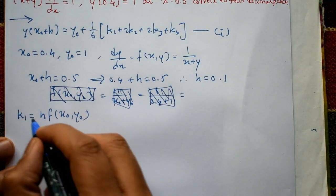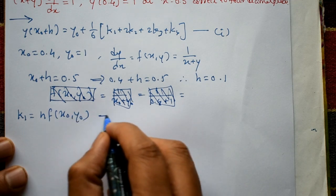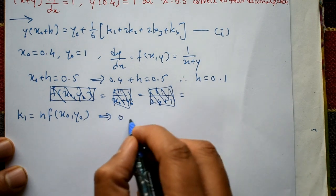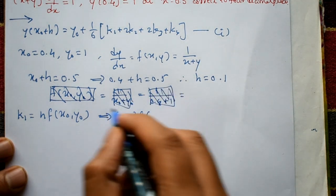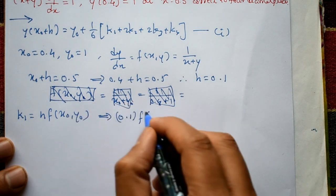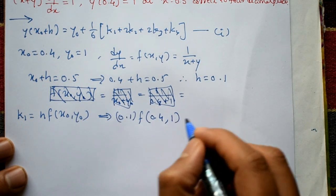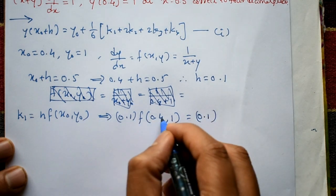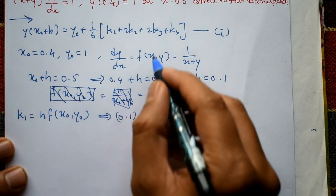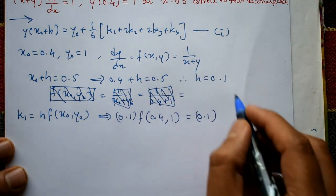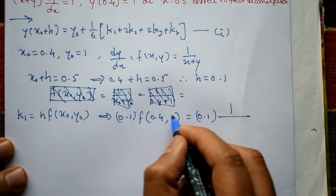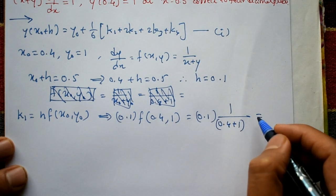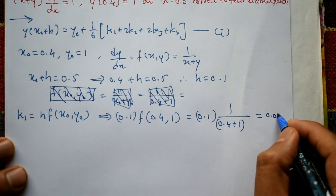Now k1 = h · f(x₀, y₀) = 0.1 · f(0.4, 1). Since f(x, y) = 1/(x + y), this is 0.1 · 1/(0.4 + 1) = 0.1 · 1/1.4, giving k1 = 0.0714.